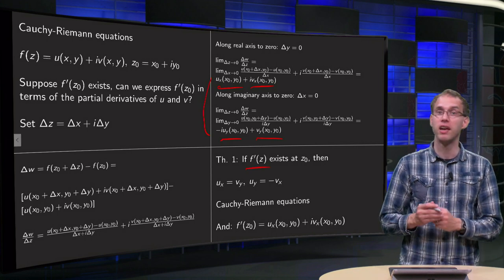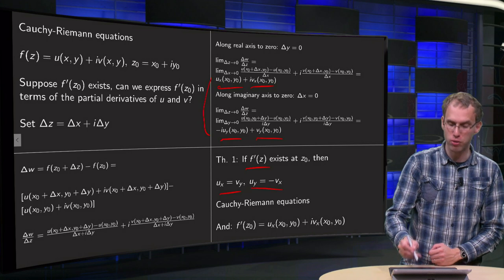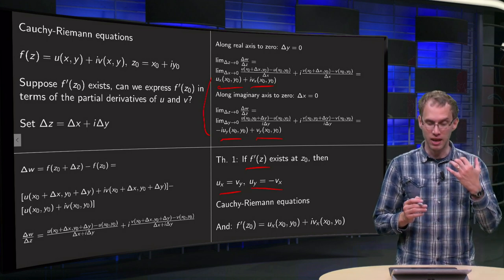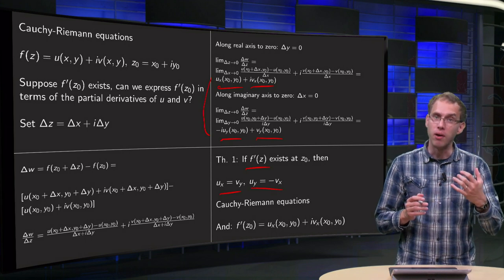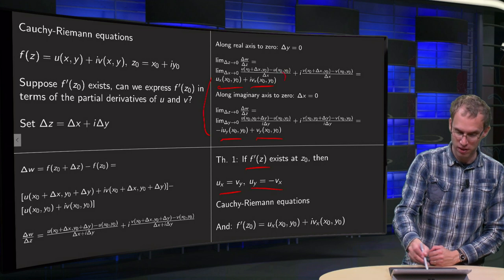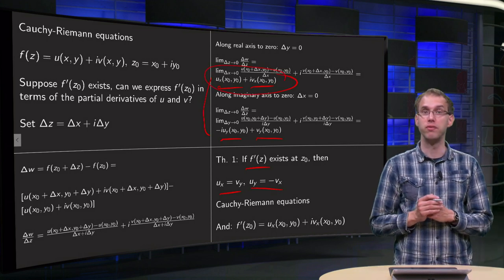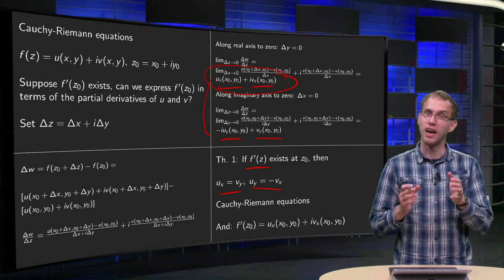And that's the theorem: if f'(z₀) exists at z₀ then you need uₓ equals vᵧ and uᵧ equals minus vₓ. And those are called Cauchy-Riemann equations. And if f is differentiable, you can find this derivative here in terms of u and v, then f'(z₀) is just uₓ plus i times vₓ at this point.